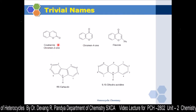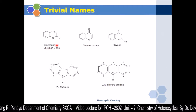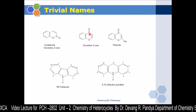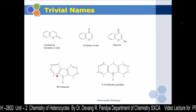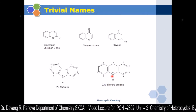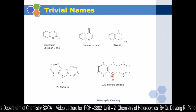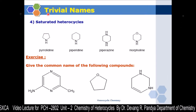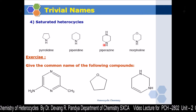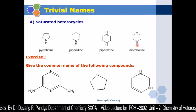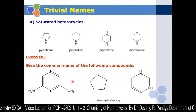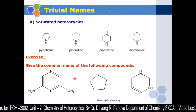Other trivial names containing oxygen include coumarin, chromene-2-one, chromene-4-one, and flavone. There is also 9H-carbazole and 9,10-dihydroacridine. For saturated heterocycles, the trivial names include pyrrolidine, piperidine, piperazine, and morpholine, where both nitrogen and oxygen heteroatoms are present. These are some exercises — after learning these trivial names, try to assign nomenclature to given compounds.